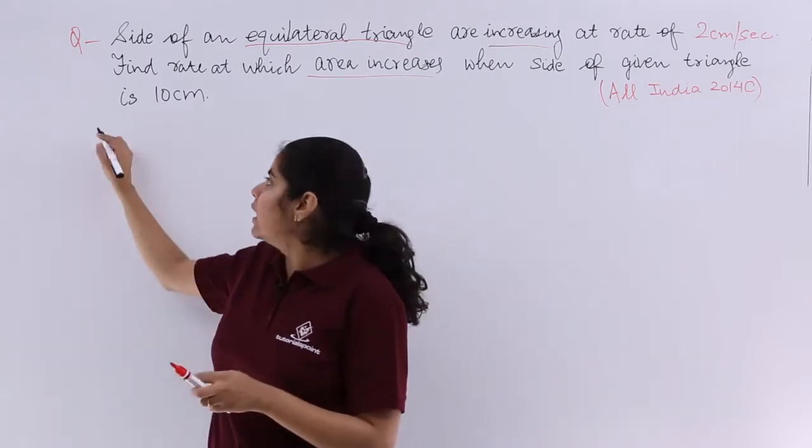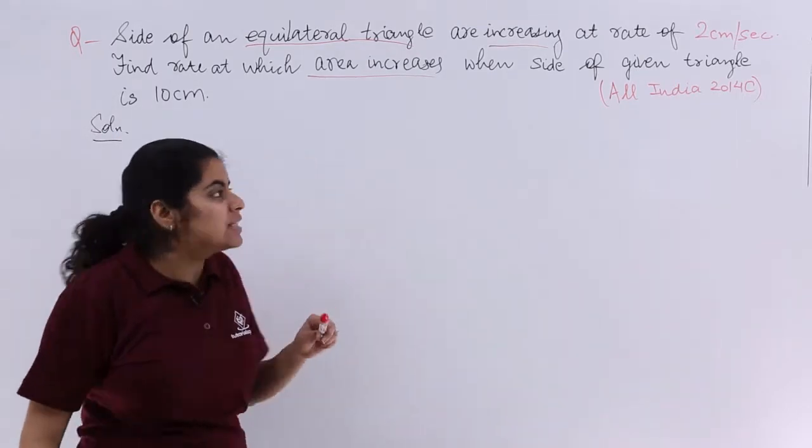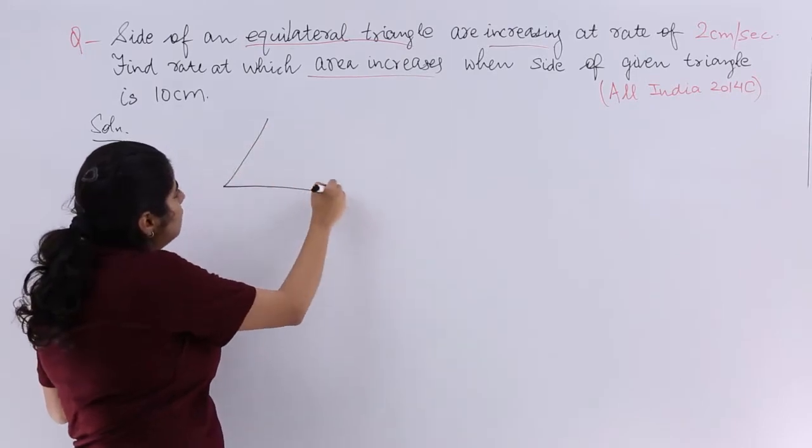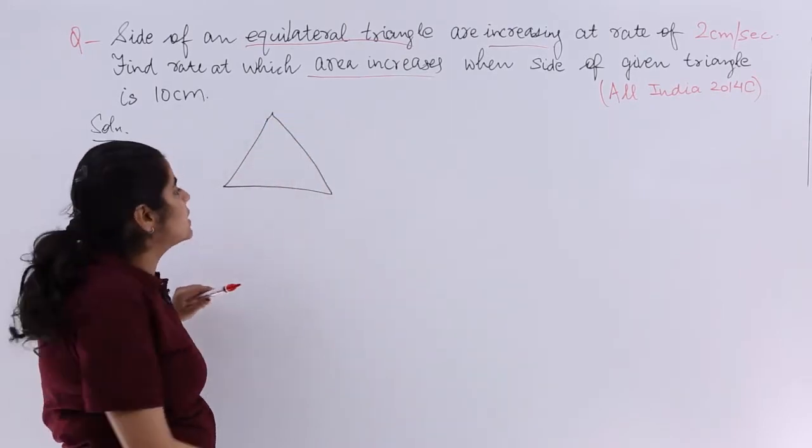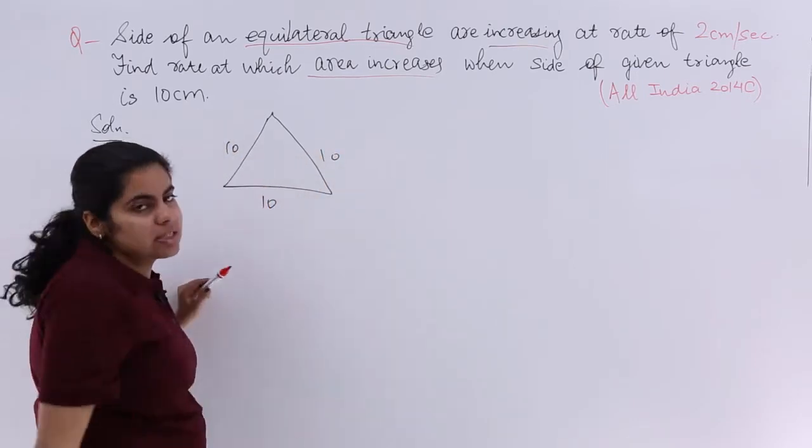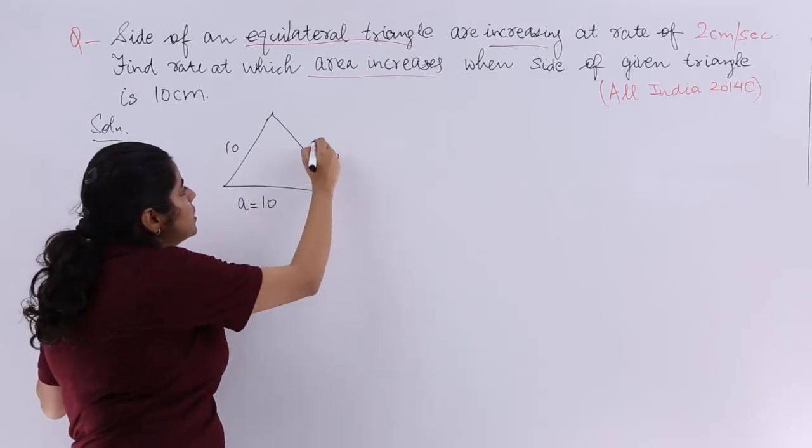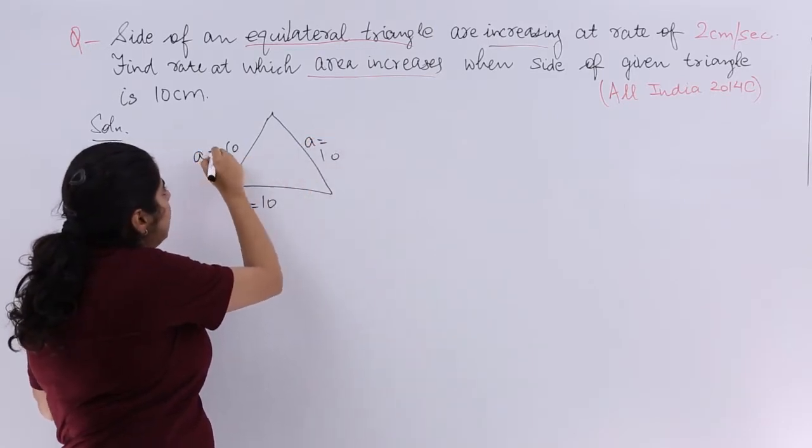So the first thing, let's write solution then let's ponder upon the given situation. It says we have an equilateral triangle. Equilateral triangle has all 3 sides equal with all 3 sides as 10 cm. And if I name each side as small a,